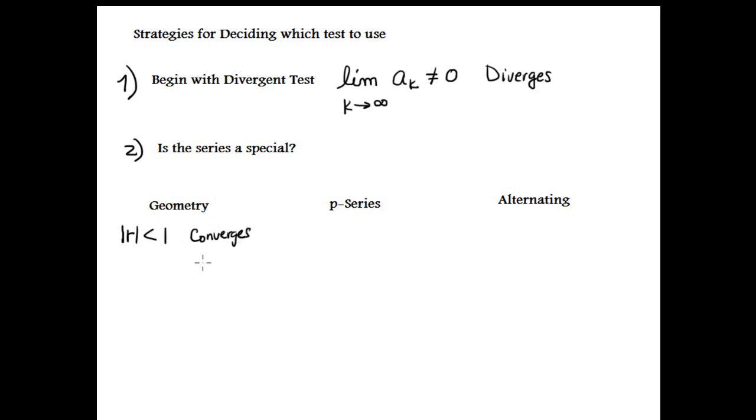If r is greater than or equal to one - the absolute value of the ratio is greater than or equal to one - the series diverges. This is for geometric series.